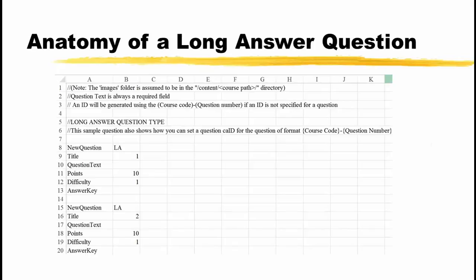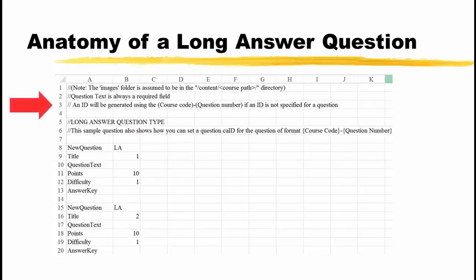The screen shows an Excel file with some comments and two long answer questions. This type of question gives the student a question and a box for entering their answer. This time, there are comments down to row 6. It is fine that there is a blank line in the comments. Blank lines mean nothing in a CSV file.